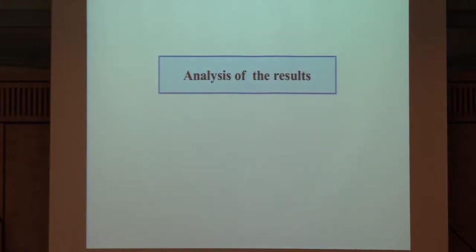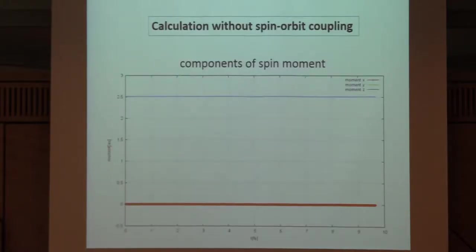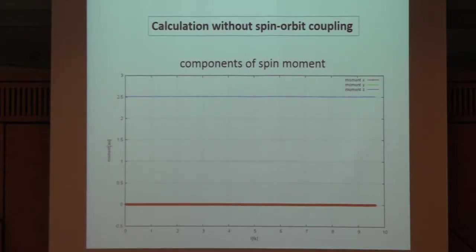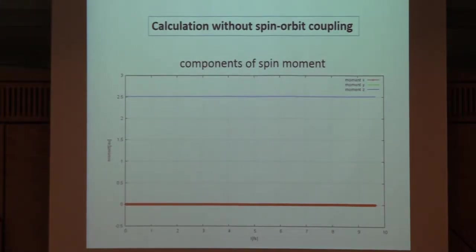Now let's analyze these results. What is the mechanism of this extremely fast decrease? The nice thing in these ab initio calculations is that you can switch off terms. We switched off spin-orbit coupling and looked at the z-component and xy-component for nickel. As a function of time, you see nothing—the magnetic moment does not change. This demonstrates that without spin-orbit coupling, there is no change in the moment.